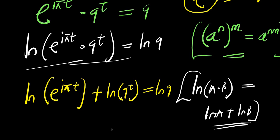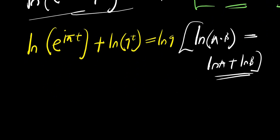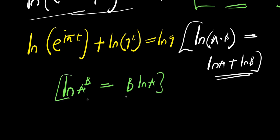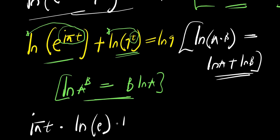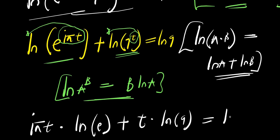We apply the logarithm power identity: if you have the natural log of A to the power of B, this equals B times the natural log of A. Applying this identity to both terms, the exponent i times pi times t comes in front of ln(e), and the exponent t comes in front of ln(9). So what we have is i times pi times t times natural log of e, plus t times natural log of 9, equals natural log of 9.